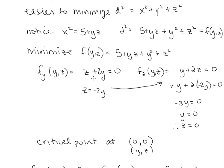f sub y equals z plus 2y. f sub z equals y plus 2z. Setting them both equal to zero, we can solve for z and substitute into the other equation. z equals negative 2y, which gives y plus 2 times negative 2y equals zero. So that's negative 3y equals zero, meaning y equals zero and also z equals zero. We have a critical point at (0, 0).